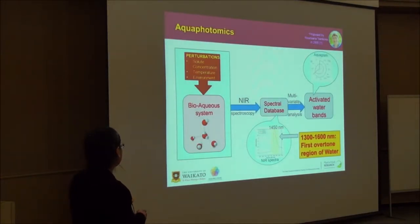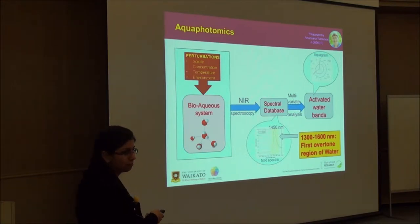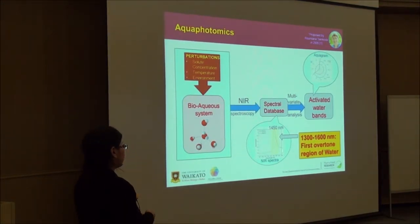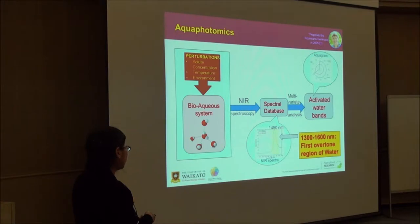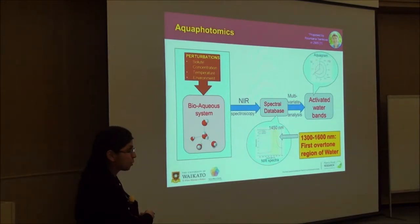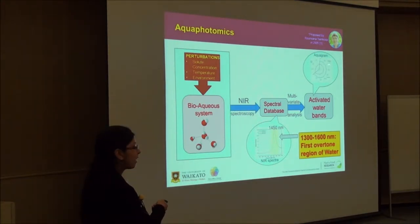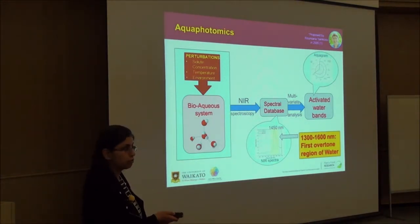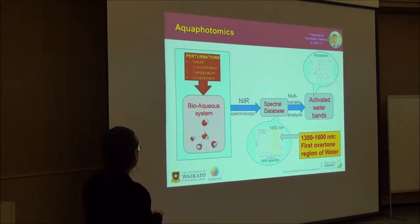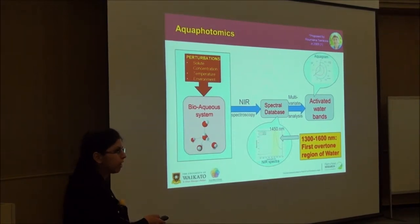This is the concept of aquaphotomics. Going through many papers, I found that most of the work has been done in the 1300 to 1600 nanometer region, but now work has also been done in the second overtone region of water. Using multivariate analysis, we can find out the activated water bands and aquagrams, and see how free and bound waters are changing when perturbations are introduced into the system. It was done mostly on aqueous systems.